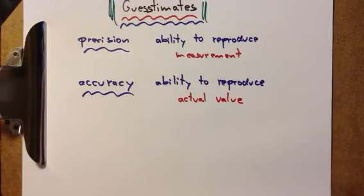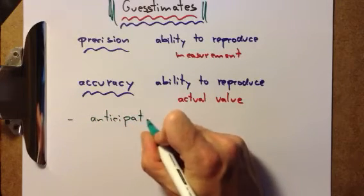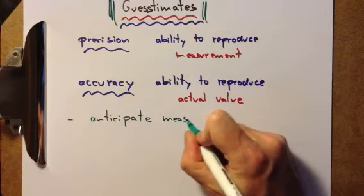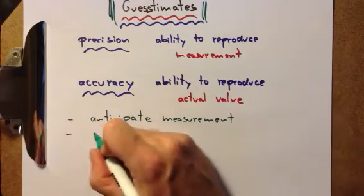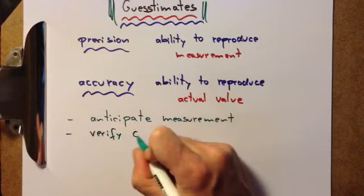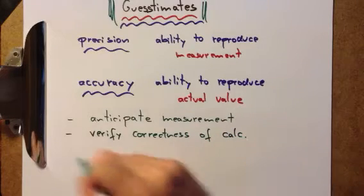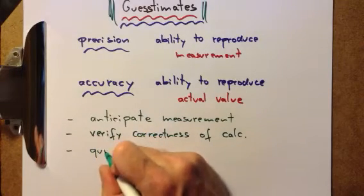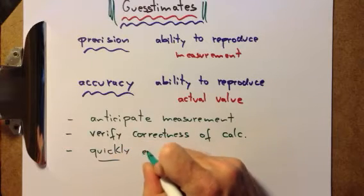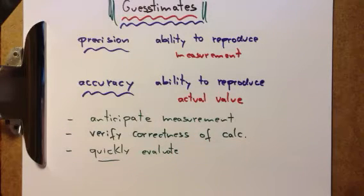Why are guesstimates useful? For example, to anticipate the result of a measurement, or to verify the correctness of a calculation, or to quickly evaluate a problem or a suggestion. In such guesstimates, one often only aims for order-of-magnitude estimates.